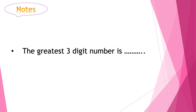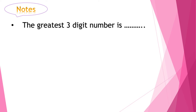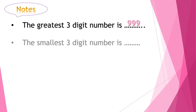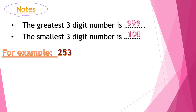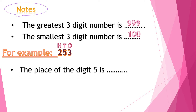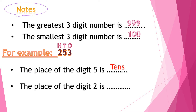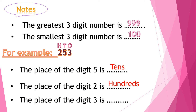We have some notes. The greatest three-digit number is 999. The smallest three-digit number is 100. For example, 253: put the place above each digit — 1s, 10s, 100s. The place of the digit 5 is 10s place, so we write 10s. The place of the digit 2 is 100s place, so we write 100s. The place of digit 3 is 1s place, so we write 1s.